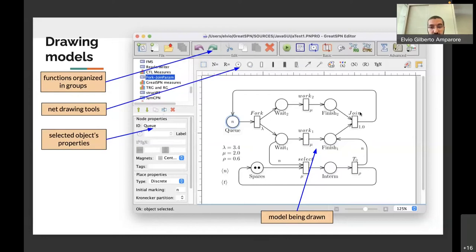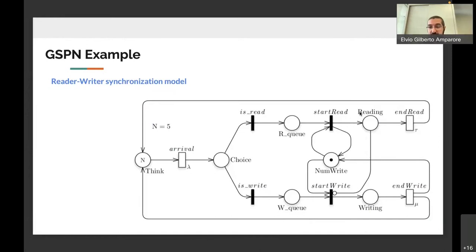Let's have a look at some examples. This is an example of a generalized stochastic Petri net in which we have places which encode the state and transitions which encode transitions may have exponential departure times and may also be immediate transitions, which are presented with these small black bars.